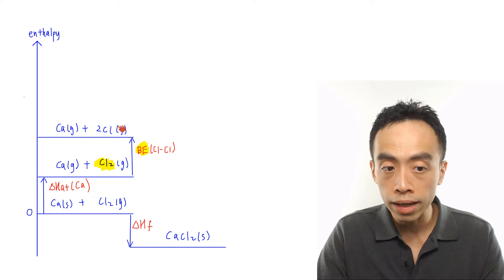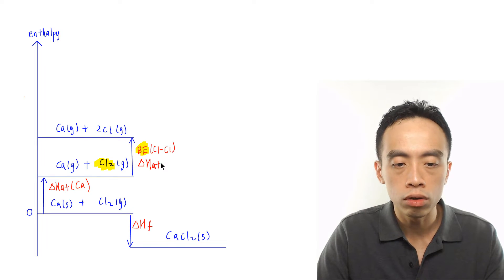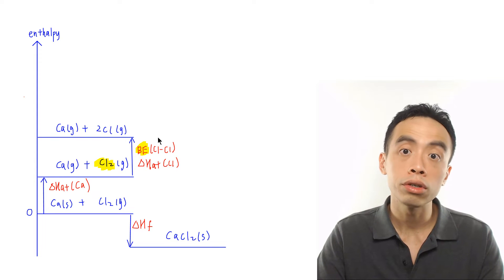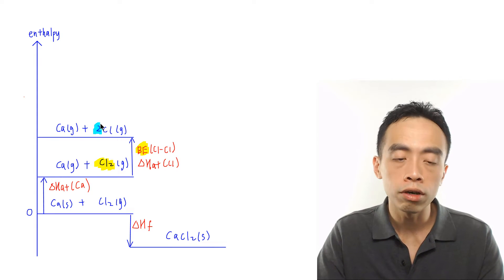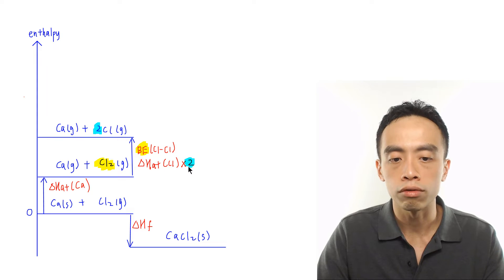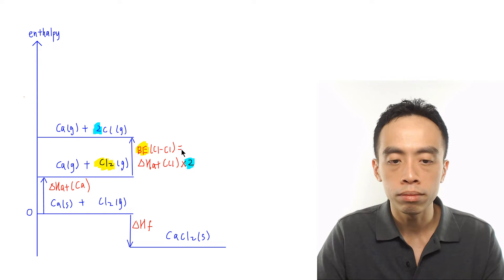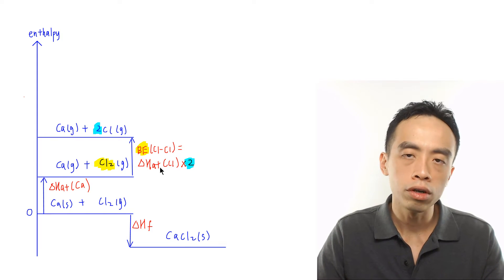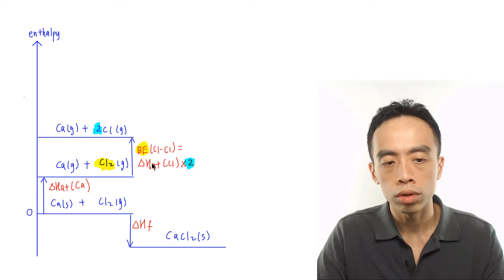If the question gives atomization of chlorine instead of bond energy, the reference point changes. Atomization is defined per mole of atom formed. Since we are forming 2 moles of chlorine atoms, the atomization term must be multiplied by 2. Atomization follows the coefficient of the number of moles of atoms being formed. These two quantities — bond energy of Cl–Cl and 2× atomization of Cl — are actually the same quantity. Usually we use the bond energy of the Cl–Cl bond found in the data booklet.